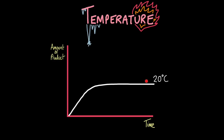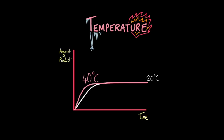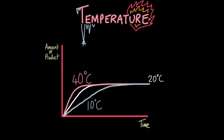Let's say a reaction is occurring at 20°C. If we increase the temperature — say we double it — we will increase the rate of reaction, shown on a graph by a steeper curve. Notice how the same amount of product is made at the end — the same reaction simply takes place faster. If we cool the reaction to 10°C, we get a less steep, more shallow rise, but it still reaches the same endpoint. A steep climb indicates a faster rate of reaction; a more gentle increase indicates a slower rate of reaction.